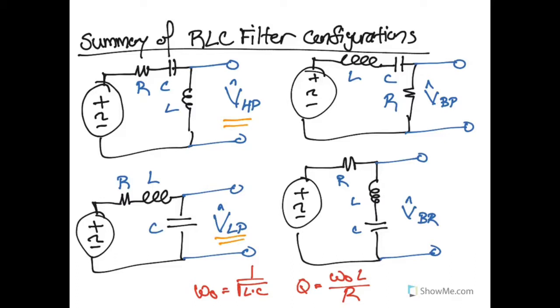This RLC filter is actually rather versatile in that it can create all four of our basic filter types: High Pass, Low Pass, Band Pass, and Band Reject. And because we have two reactive elements—the inductor and the capacitor—these High Pass and Low Pass circuits actually have a quality factor to them.